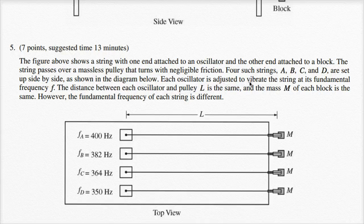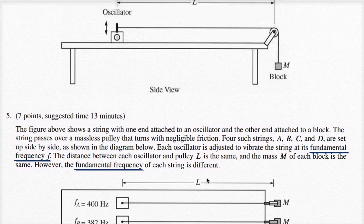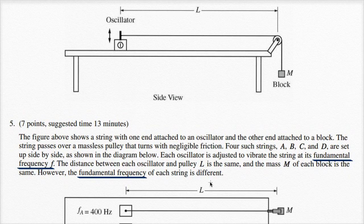Each oscillator is adjusted to vibrate the string at its fundamental frequency F. Let's think about what fundamental frequency means. The fundamental frequency is the lowest frequency that is going to produce a standing wave in your string.